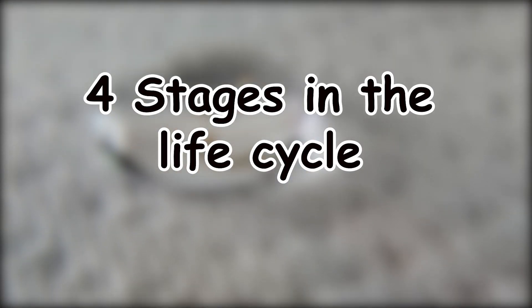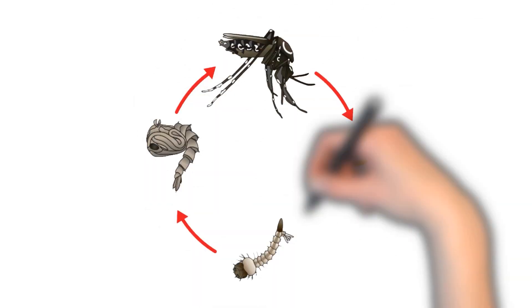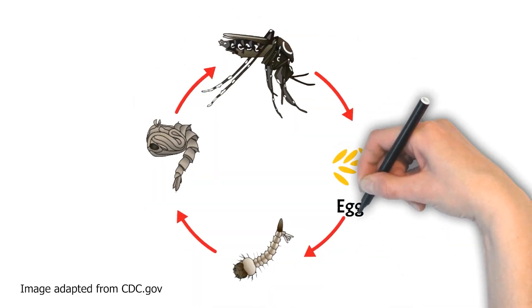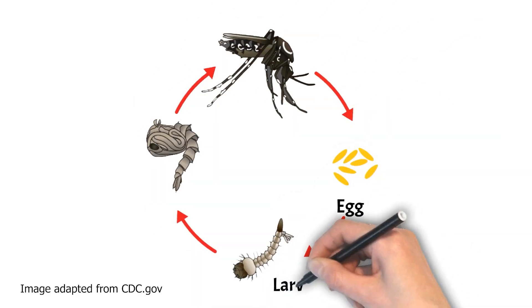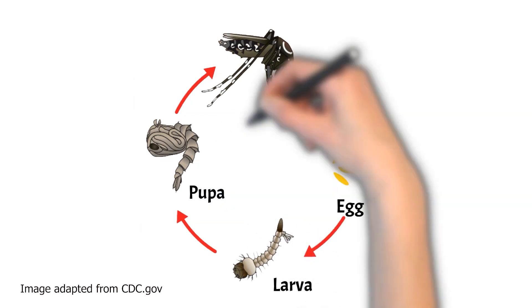There are four stages in the life cycle of a mosquito: the egg, the larva, the pupa, and the adult.